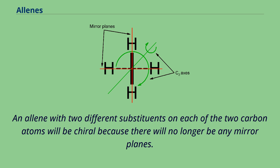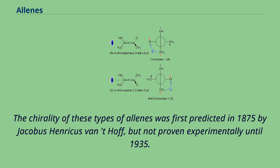An allene with two different substituents on each of the two carbon atoms will be chiral because there will no longer be any mirror planes. The chirality of these types of allenes was first predicted in 1875 by Jacobus Henricus van 't Hoff, but not proven experimentally until 1935.